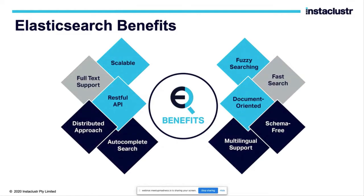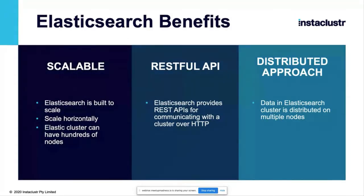Some of the benefits of Elasticsearch: it is scalable, provides full-text search support, and provides a RESTful API — so any application that supports RESTful API can connect to Elasticsearch and start inserting or retrieving data. It has a distributed approach and works in a cluster environment. You can start an Elasticsearch cluster with one node, and it can scale to 200 nodes. That's the beauty of Elasticsearch.